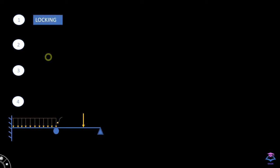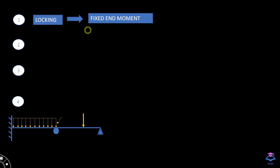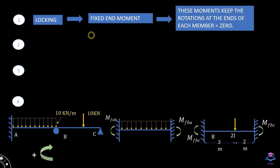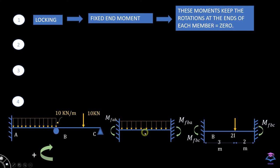The first step in Moment Distribution is the locking process. Each and every joint of the continuous beam is considered as fixed and applied a fixed end moment. Fixed end moments don't allow any rotation at the support or at the joints. Consider a 2-span continuous beam — both spans, AB and BC, are converted into fixed end beams, and at the supports as well as at the joints, fixed moments are applied.